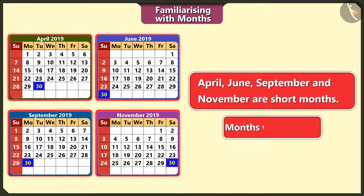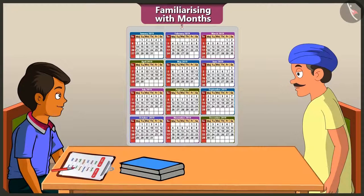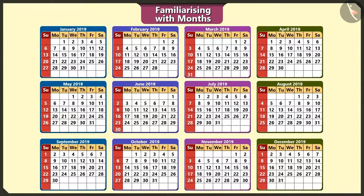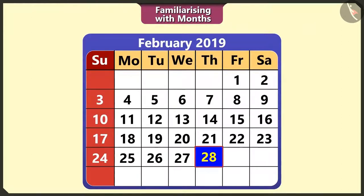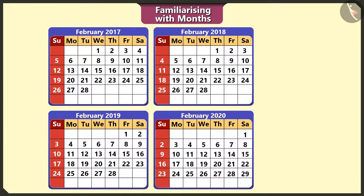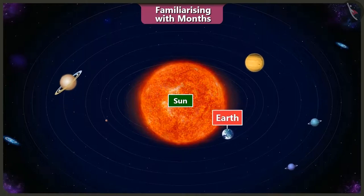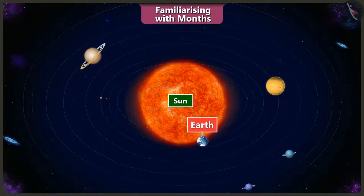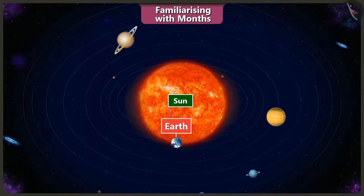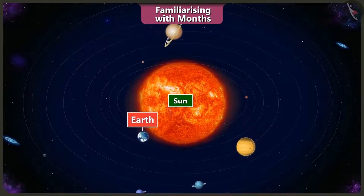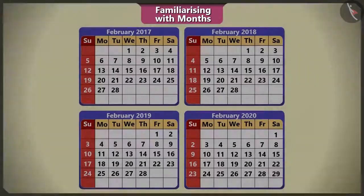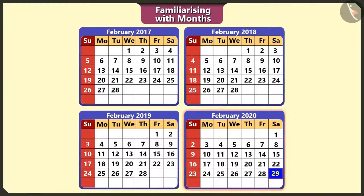Hey, you did not tell how many days are there in the month of February! Chotu, February is the shortest month. Normally, there are 28 days in February. But once in every 4 years, there are 29 days in February, because it takes 365 days and 6 hours for the earth to complete one revolution around the sun. These remaining 6 hours of every year added together for 4 years becomes 1 day. So, every 4th year, the month of February has 29 days, which is called a leap year.